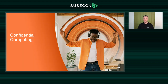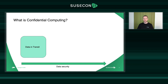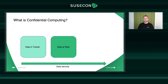Hi, my name is Jörg Rödel, and I'm going to show you the confidential computing capabilities of the Adaptable Linux Platform. Confidential computing is about data security. There are several states of data where it needs to be protected. First is data in transit — when we transfer data over the network, we can protect it with technologies like TLS or SSL, so the data is encrypted and cannot be spied on or stolen. We can also secure data at rest — when data is stored on disk, we can encrypt it using disk encryption, so the data cannot be stolen from a disk.